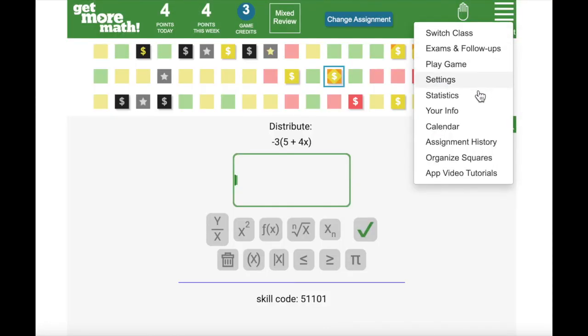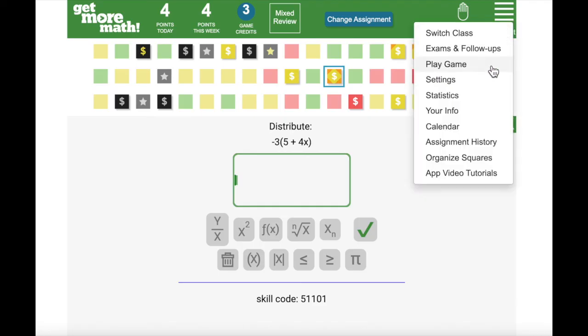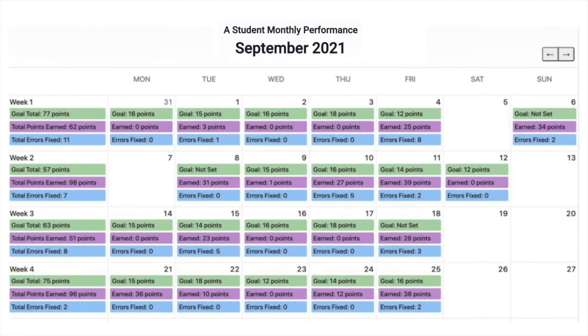You can also view your statistics, both overall and for the particular skill you're currently working on. By looking at the calendar, you'll be able to see your data for each day, week, and month of the year.